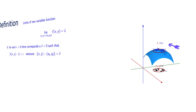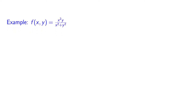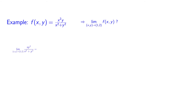Let's compute some limits. Here is a function of two variables: a quotient with numerator x²y and denominator x² + y². We ask what is the limit as (x, y) approaches to (1, 2). There is no problem here, since at x = 1 and y = 2, our function is well defined. So we can plug in x = 1 and y = 2, and after some simplification, we get 2/5. So the limit of our function is 2/5 at that point.